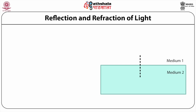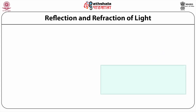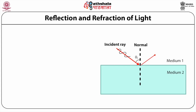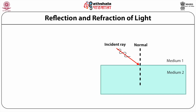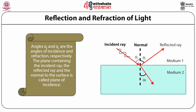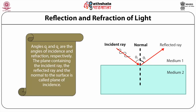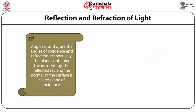Reflection and refraction of light are phenomena understood using the ray properties of light, where we assume light travels as rays. When these rays are incident on a surface or interface between two media, some rays get reflected and some get transmitted. The angle of incidence equals the angle of reflection. The refracted ray in the second medium makes an angle of refraction, and the plane containing the incident ray, refracted ray, and normal to the surface is called the plane of incidence.